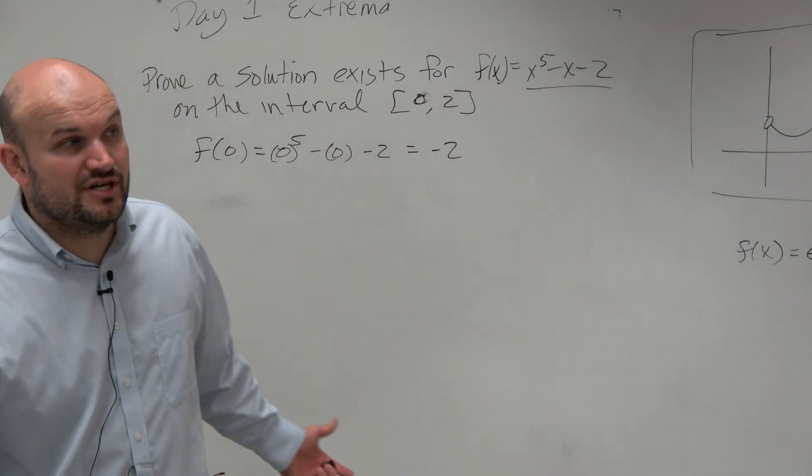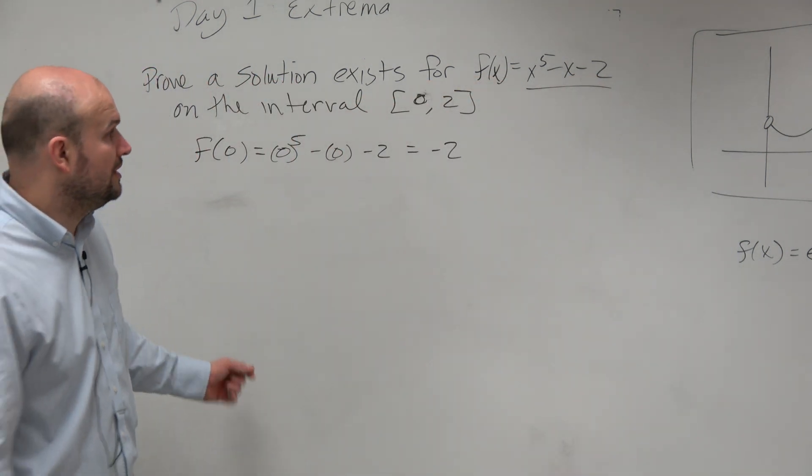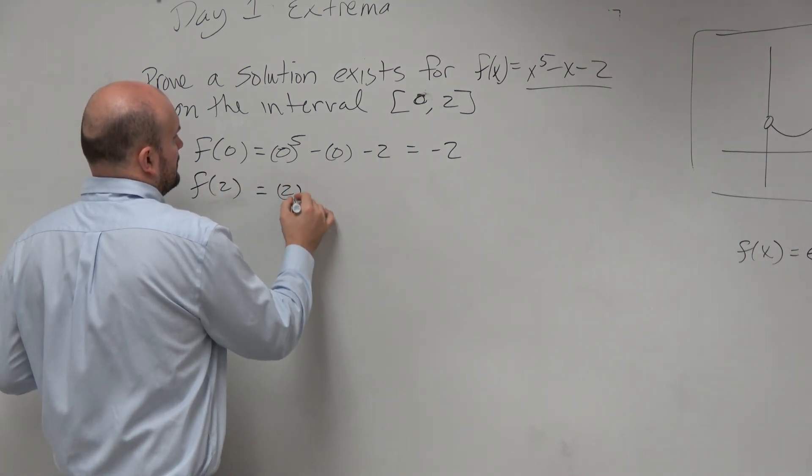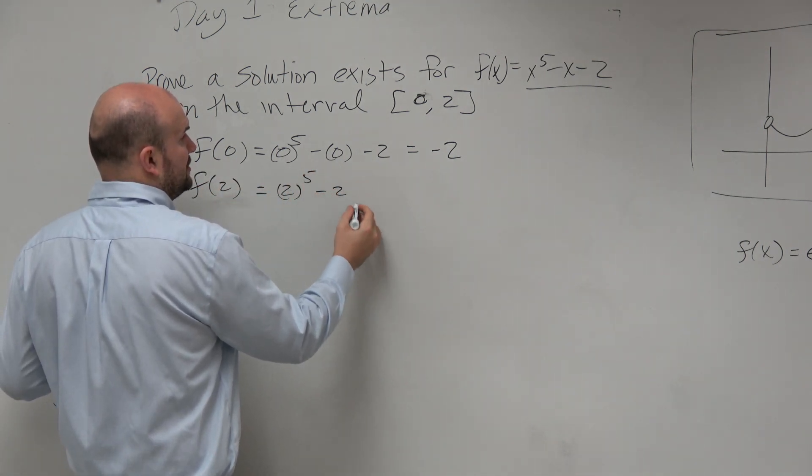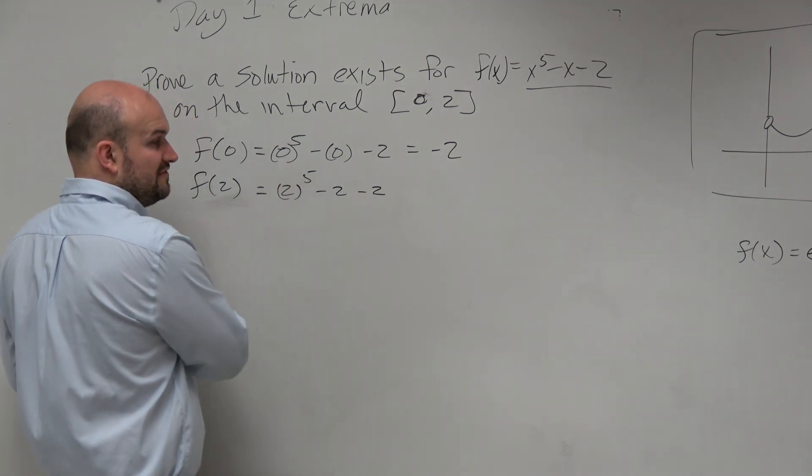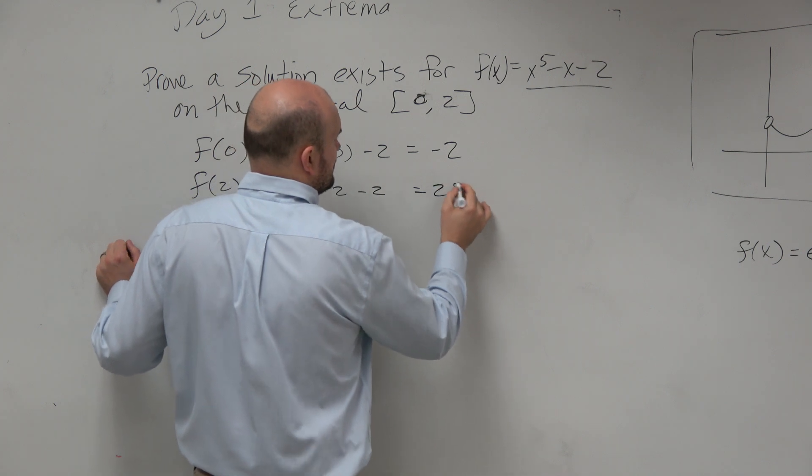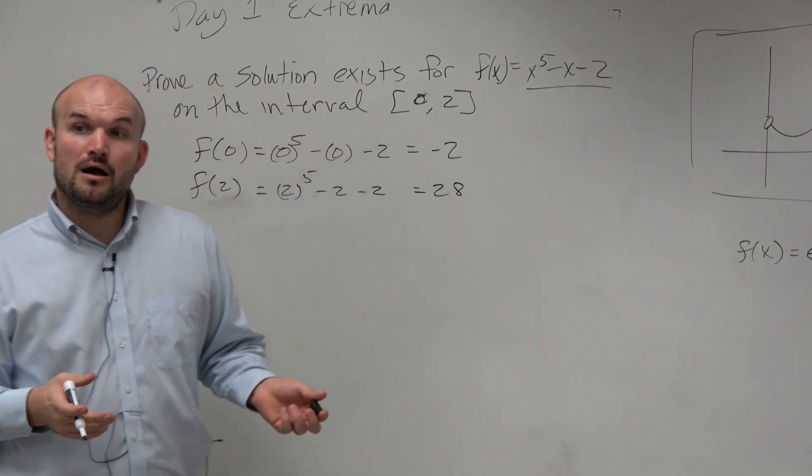And sometimes you might have to check other values within the closed interval. Change it up. Now let's check f of 2. 2 to the fifth minus 2 minus 2. 2 to the fifth is 32. Minus 2 is 30. Minus 2 is 28.